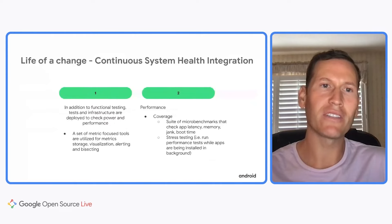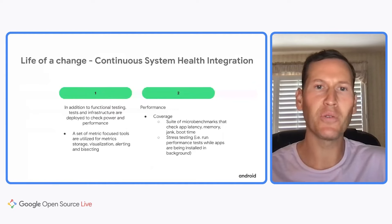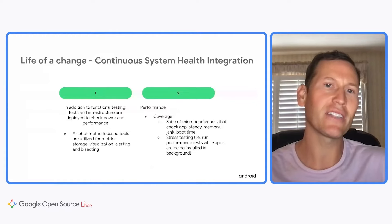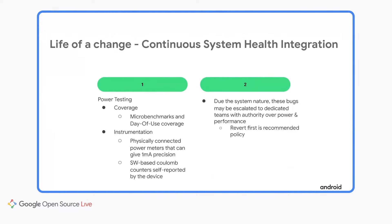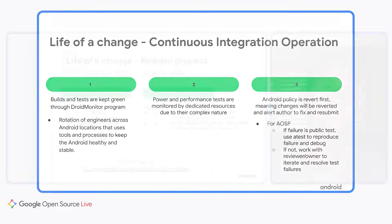System health includes power and performance testing. Specialized performance micro, macro, and stress tests are run. There are tools focused on processing, storing, visualizing, alerting, and bisecting on metric-based tests. Power tests have microbenchmarks as well as more user-realistic, day-of-use coverage — instrumented through physical power meters as well as software-based device reports. Builds and tests are kept green through a global rotation program of Android engineers using established tools and processes. Android's policy is revert first — bad changes will be reverted and the author alerted to fix and resubmit.